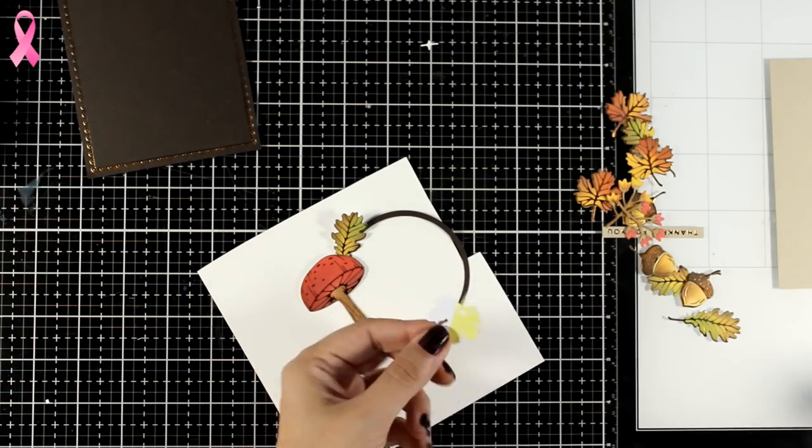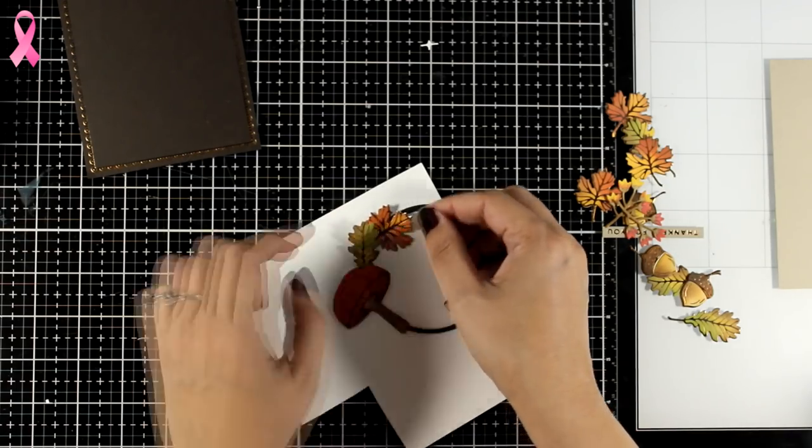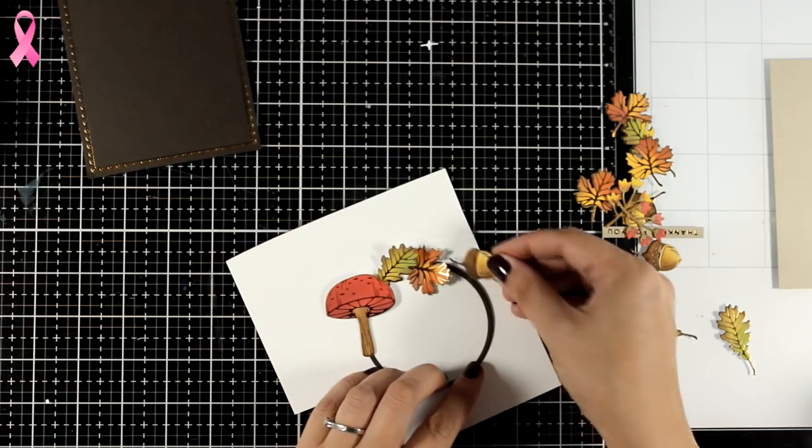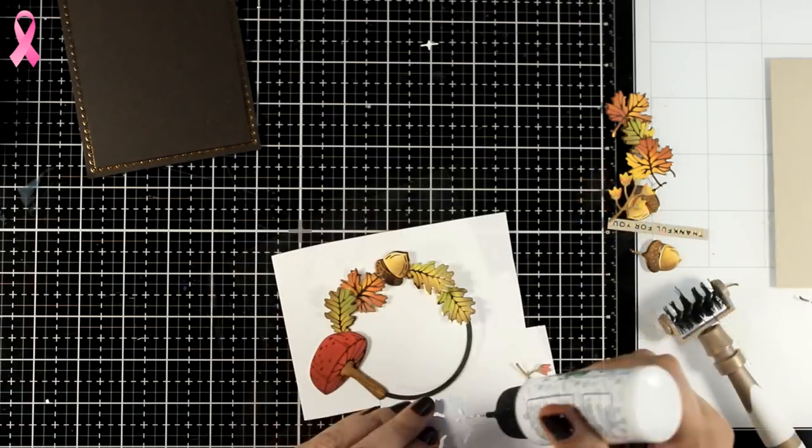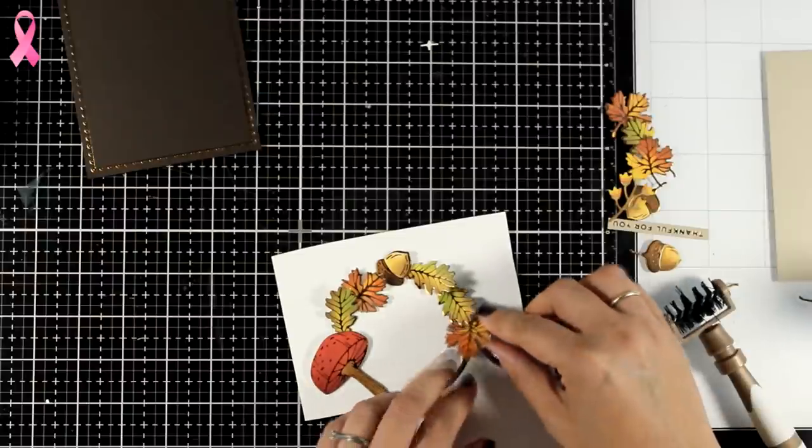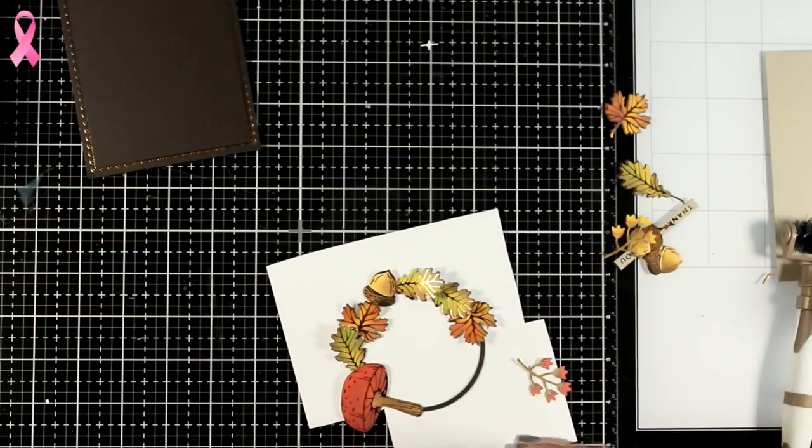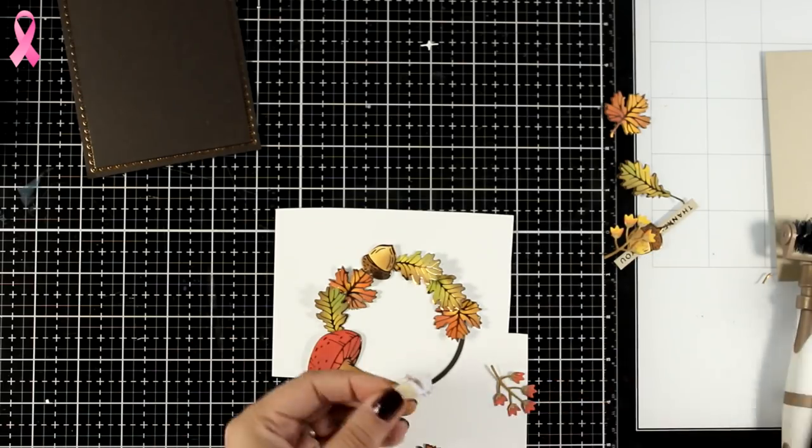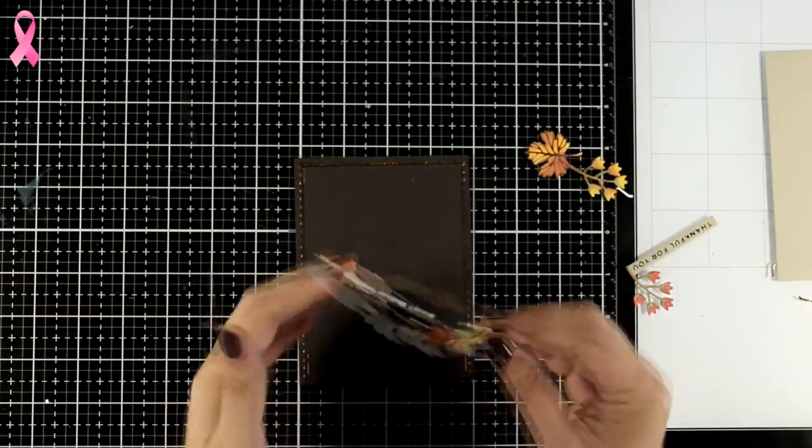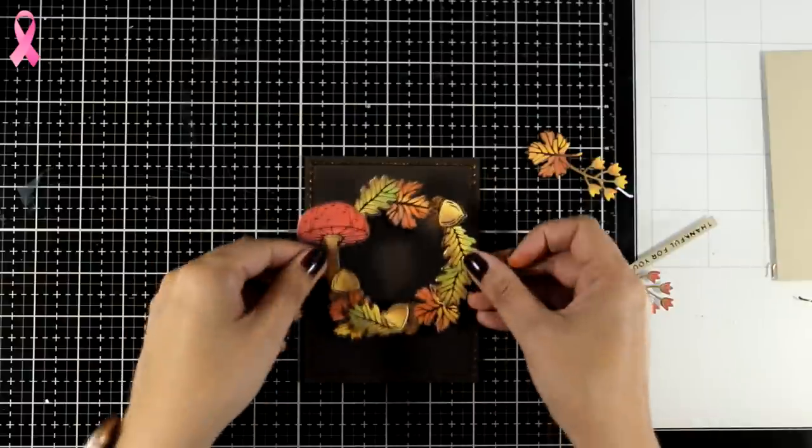And I'm not going to stick the leaves completely flat. I'm leaving the tips a little bit curved up so that it gives some dimension. I'm just going to go all around the wreath and completely cover it up. Once that was ready I did add tiny little foam tape pieces at the back for extra dimension.